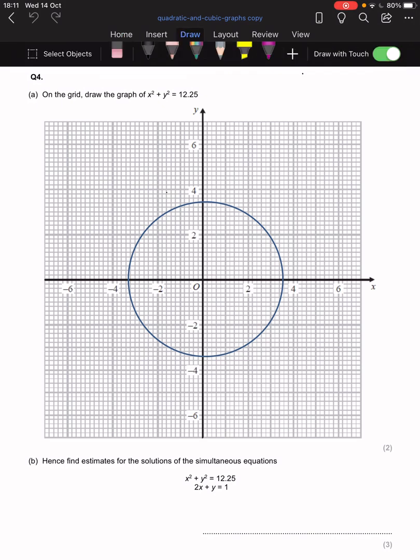Now, hopefully you know that if you have an equation of the form x squared plus y squared equals some number, it actually equals the radius squared, because this is the equation of a circle, the general form of the equation of a circle with a center at the origin.